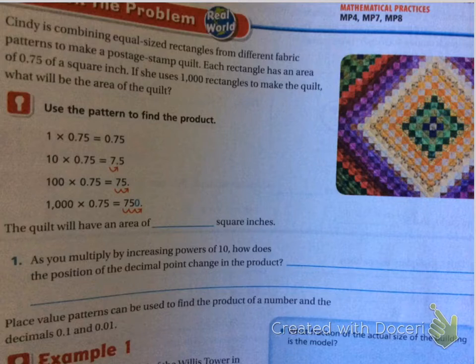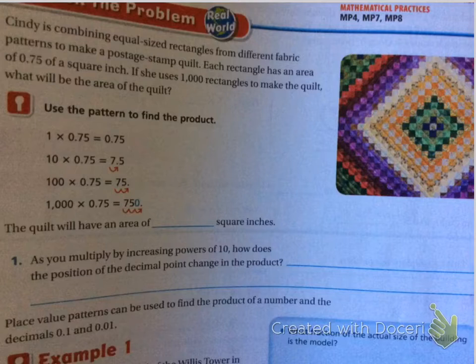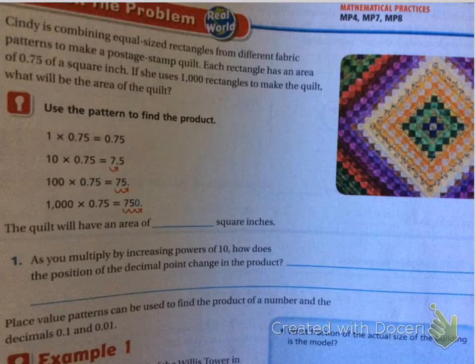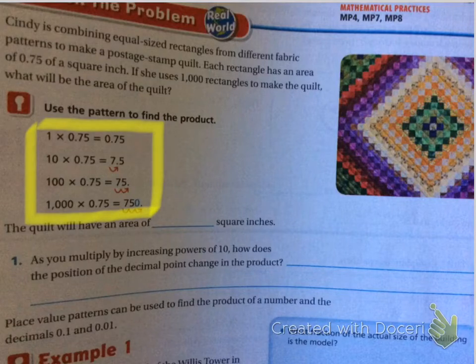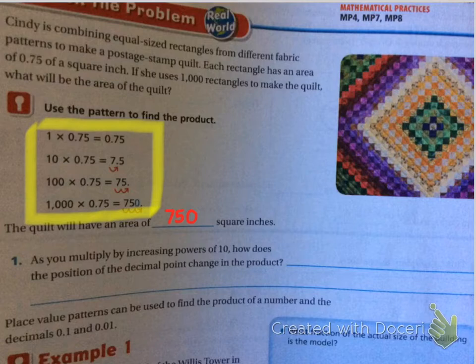On page 233, the word problem is: Cindy is combining equal-sized rectangles from different fabric patterns to make a postage stamp quilt. Each rectangle has an area of 0.75 of a square inch. If she uses 1,000 rectangles to make the quilt, what will be the area of the quilt? To do that, we're going to have to move some decimals around and find the pattern. You can see the decimal point is moving over to the right.